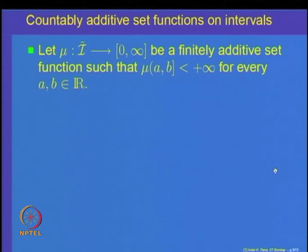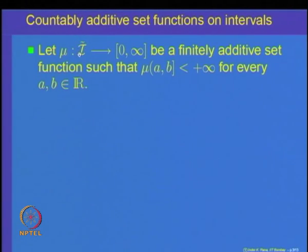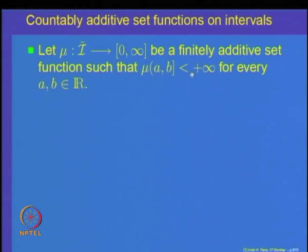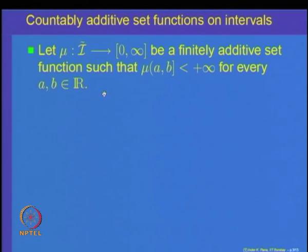We were trying to show that if mu is a finitely additive set function defined on the collection of all left open right closed intervals, denoted by I tilde, with the property that mu of any finite interval is finite — mu of the left open right closed interval (a,b] is finite for every a and b — then we wanted to characterize the countably additive properties of such functions and relate them to a class of functions on the real line.